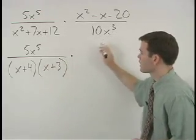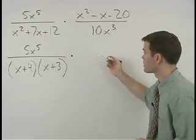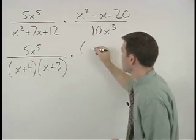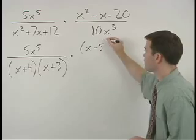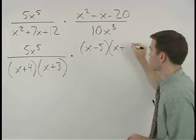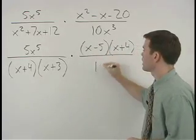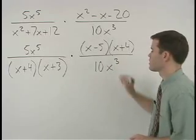In the second expression, notice that the numerator factors and we have x minus 5 times x plus 4 over 10x to the third.